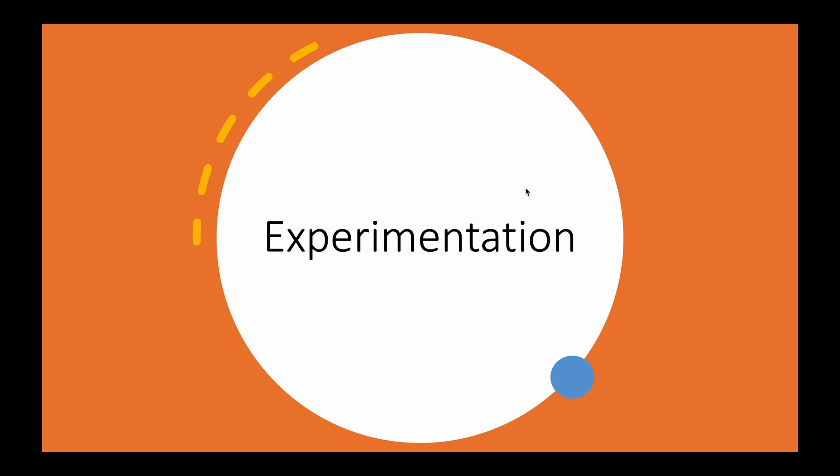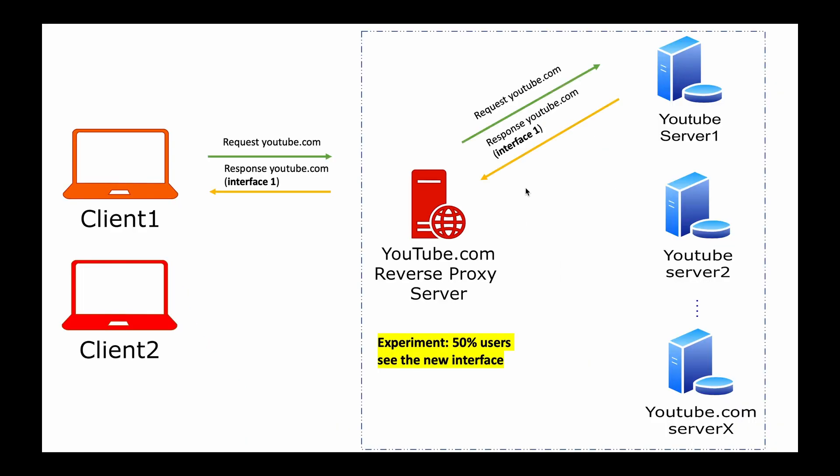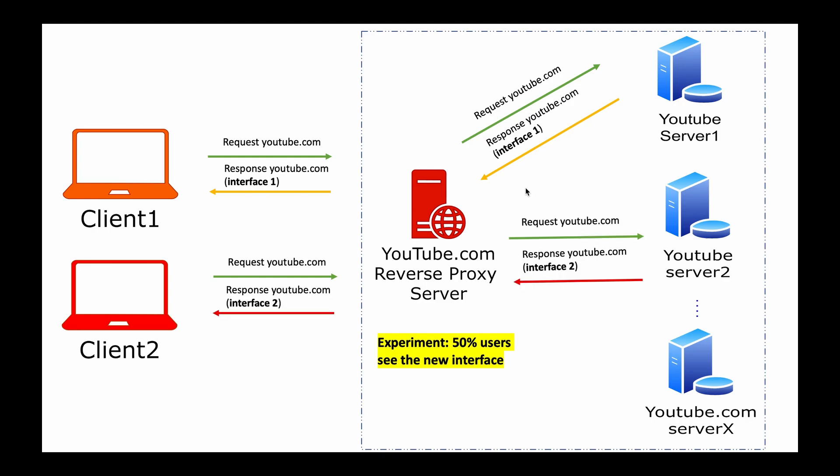Experimentation is also one interesting benefit that comes from reverse proxy. A number of times when a new feature needs to be rolled out, it gets deployed in a canary fashion. For example, YouTube wants to test a new interface, but they're not sure if the customers would like it or not. So instead of releasing the new interface to all customers, an experiment is launched. The decision whether to roll out interface two to all customers depends on the response of the customers who were shown interface two.